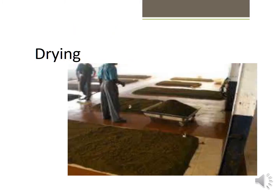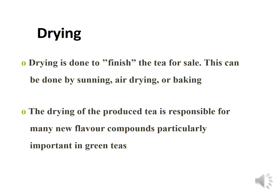Next comes drying. As you can see in the image, tea leaves are being dried — spread out on the floor. Drying methods include sunning, air drying, or baking. Drying of the produced tea is responsible for many new flavor compounds, particularly important in green teas, so that the flavor compounds are extracted and the tea is ready.